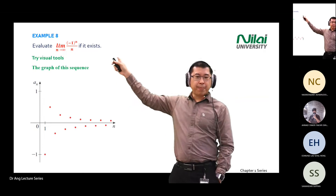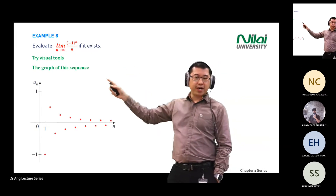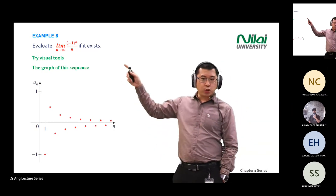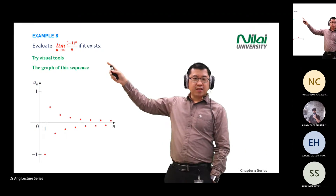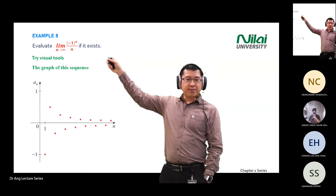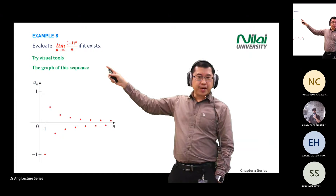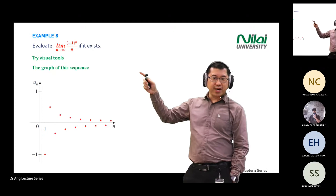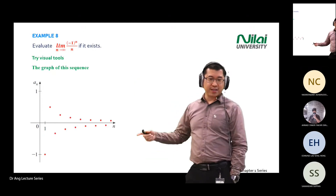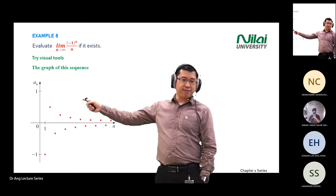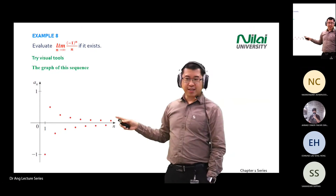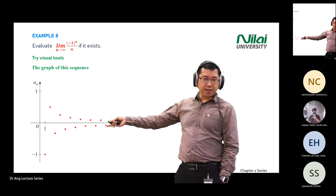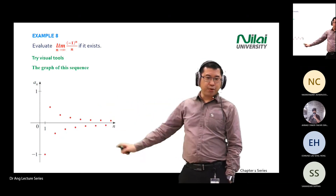If n is one, (-1)^1 divided by 1 gives minus one. If n increases to two, (-1)^2 divided by 2 gives one-half, which is 0.5 — so you see the second data point further along, at 0.5.